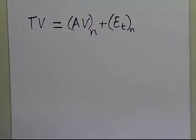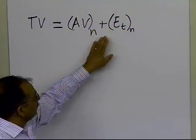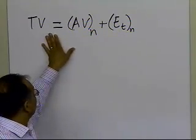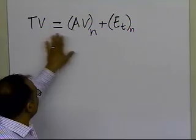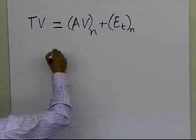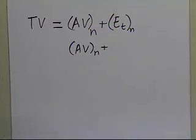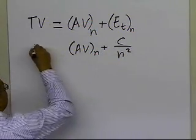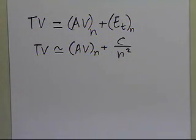The true value equals the approximate value from the n-segment trapezoidal rule, plus the true error for that n-segment rule. If I substitute c divided by n squared for the true error, then the true value becomes approximately equal to the approximate value using n segments, plus c divided by n squared.